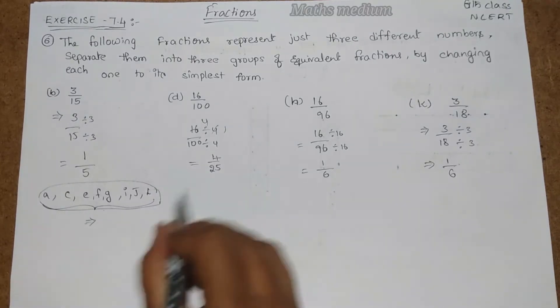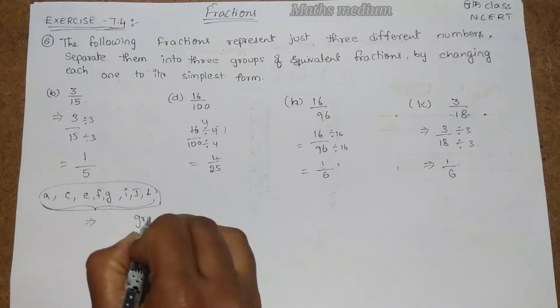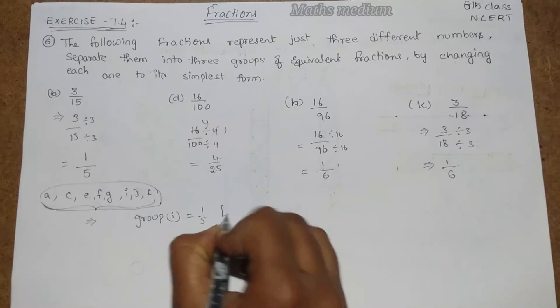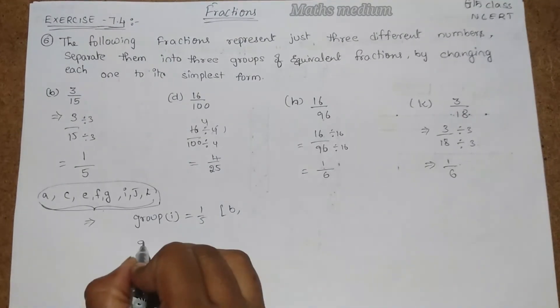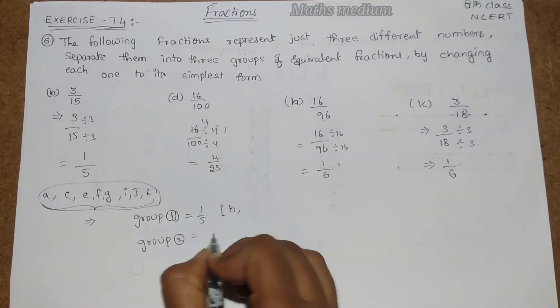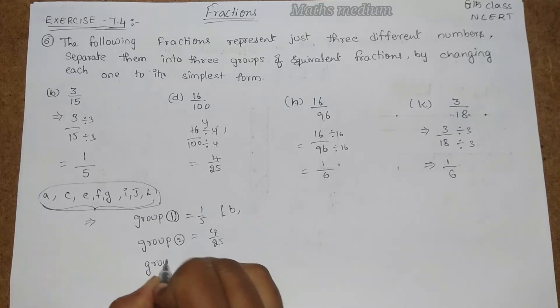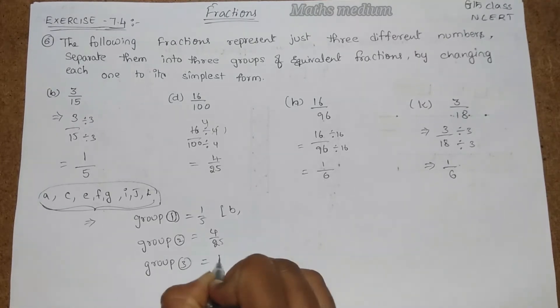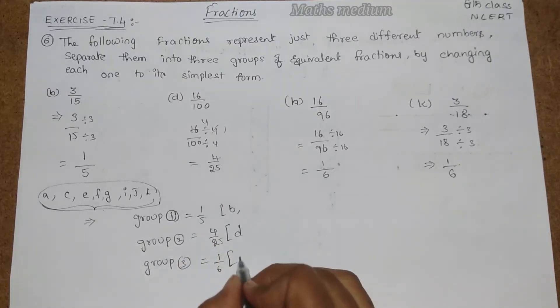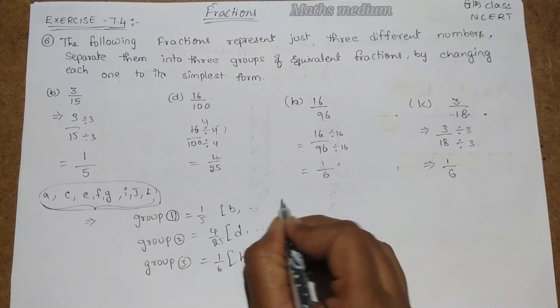I am taking here as group 1, that is 1 by 4. Here I get b. This is group 2, that is 4 by 25. And next, group 3, that is 1 by 6. Here I have d, and here I have h and k as well.